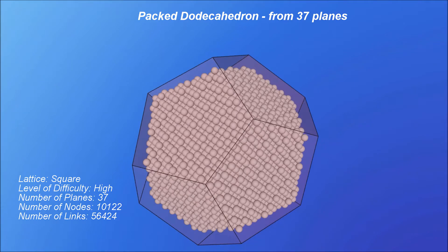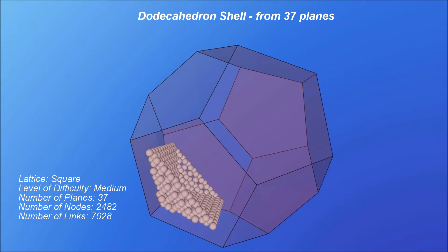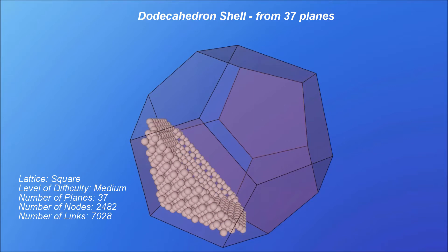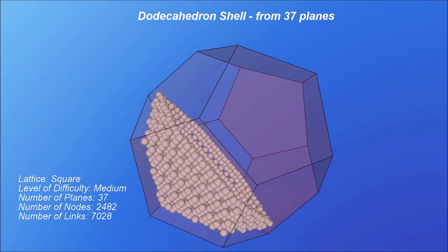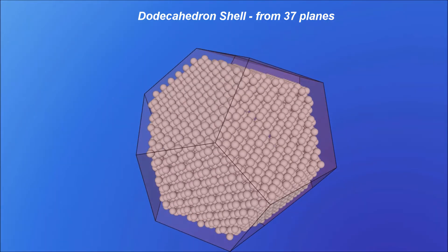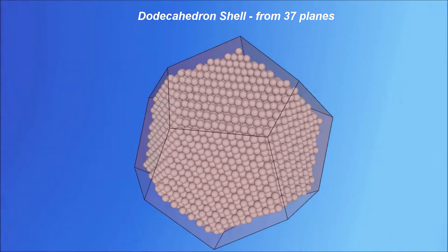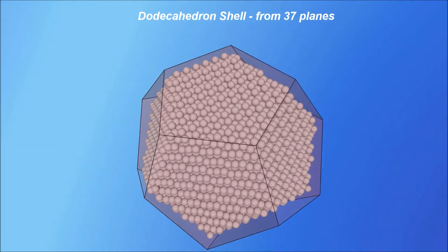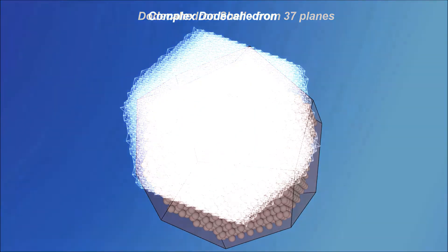Let's have a look only at the outside layers of nodes that create a dodecahedron. This helps us see the details that are critical to the understanding of this pattern. The icosahedron and dodecahedron are super patterns. To come into existence, these patterns need a relatively large number of spheres in the CPS arrangement. For example, the dodecahedron pattern shown here, as a platonic structure, requires 10,122 spheres and 56,424 struts.